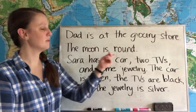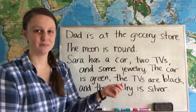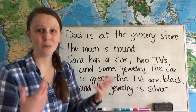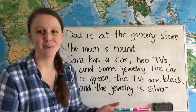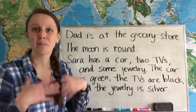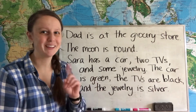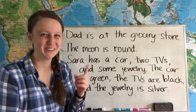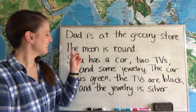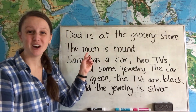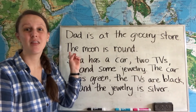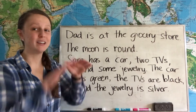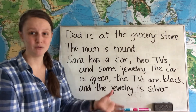When we talk about the moon, our planet Earth only has this one main moon, so we all know which one we're talking about. The moon is round.